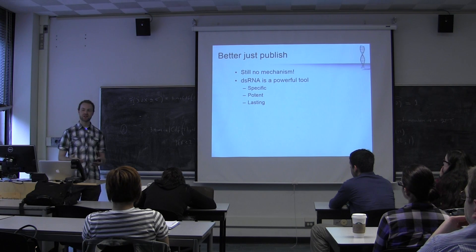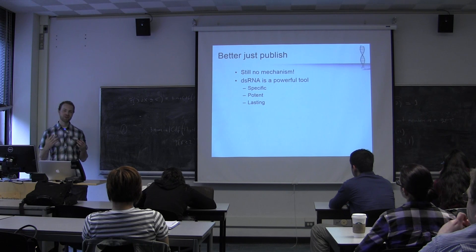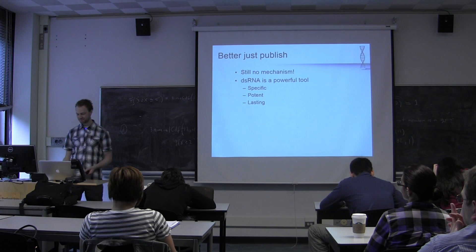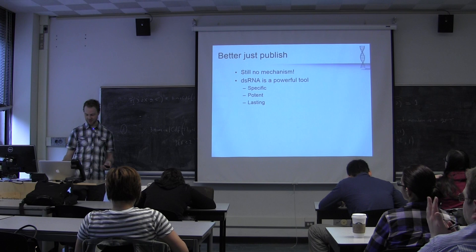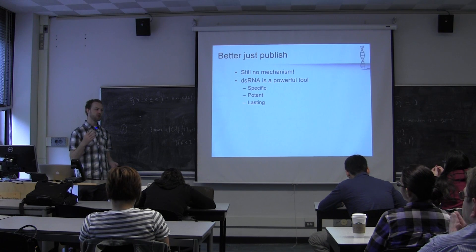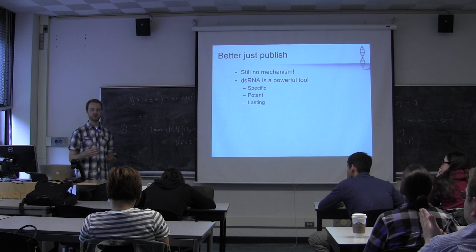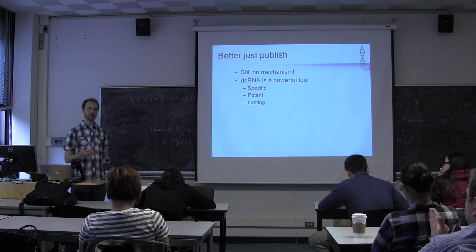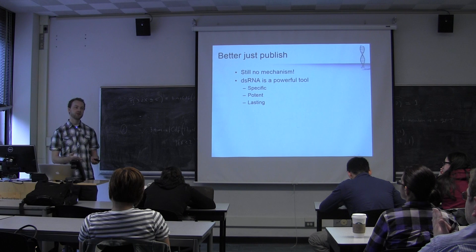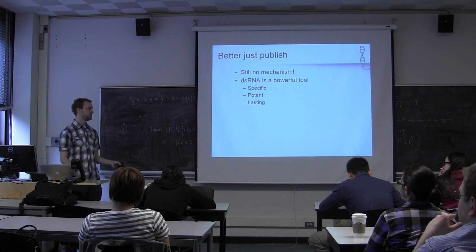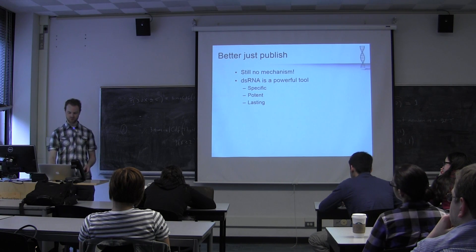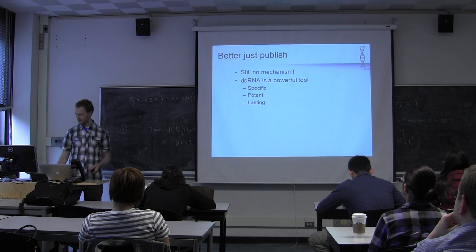They've done all these experiments, found that double-stranded RNA is definitely interfering, but still don't have a mechanism. At this point, they decided to just publish. It's a very powerful tool - they recognized that immediately. You can do things with this that previous RNA interference technology with single-stranded RNA couldn't do, because it's not shutting things down completely. It's a really great tool for seeing what genes do, you can shut down specific genes and see the phenotype - it's potent and it lasts a while. So they wrote up their paper and published.